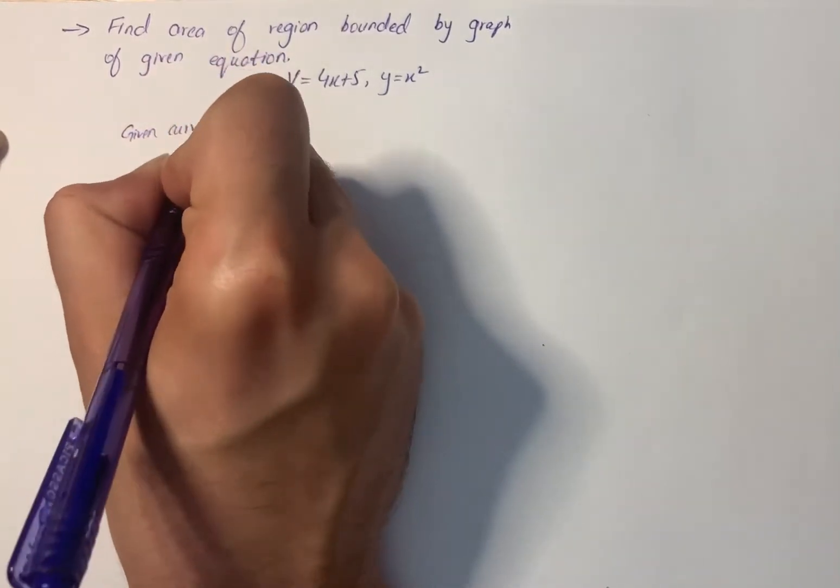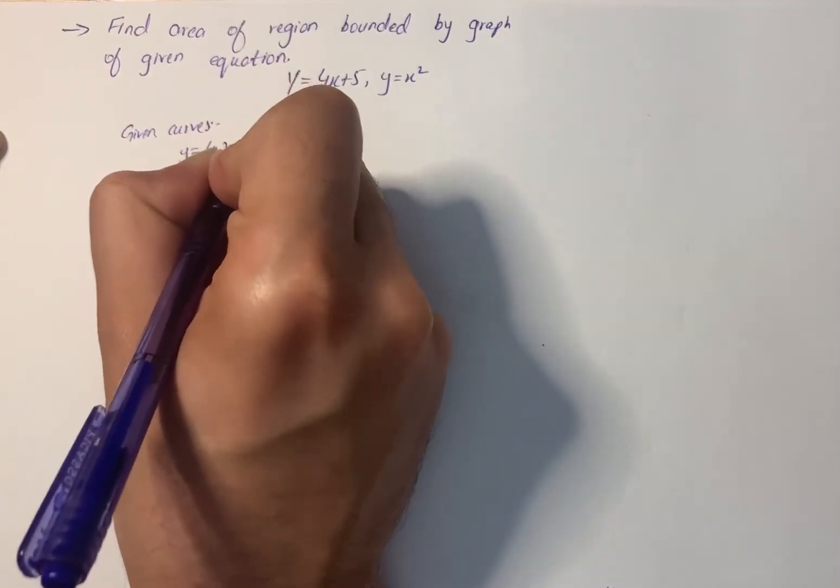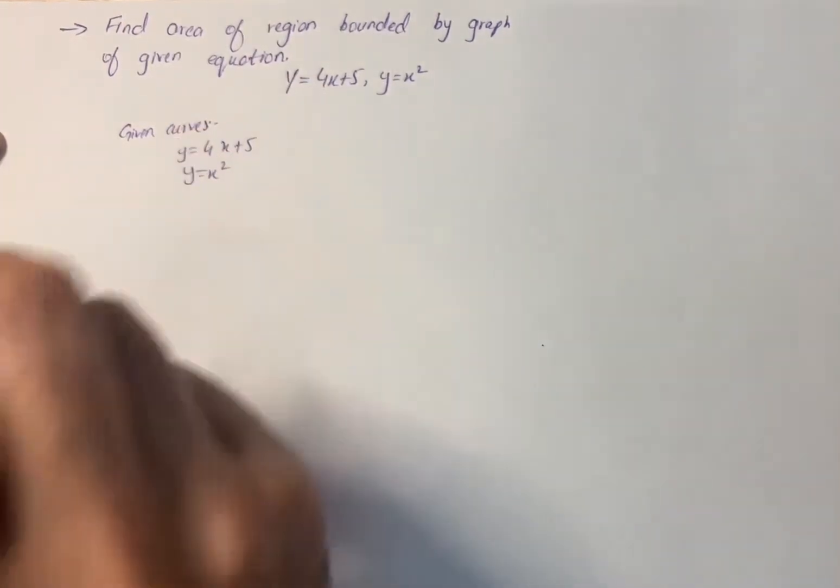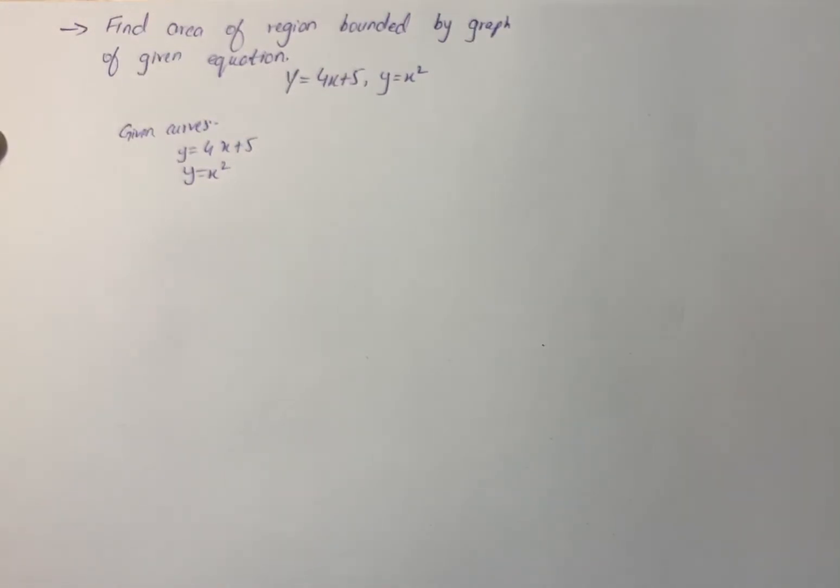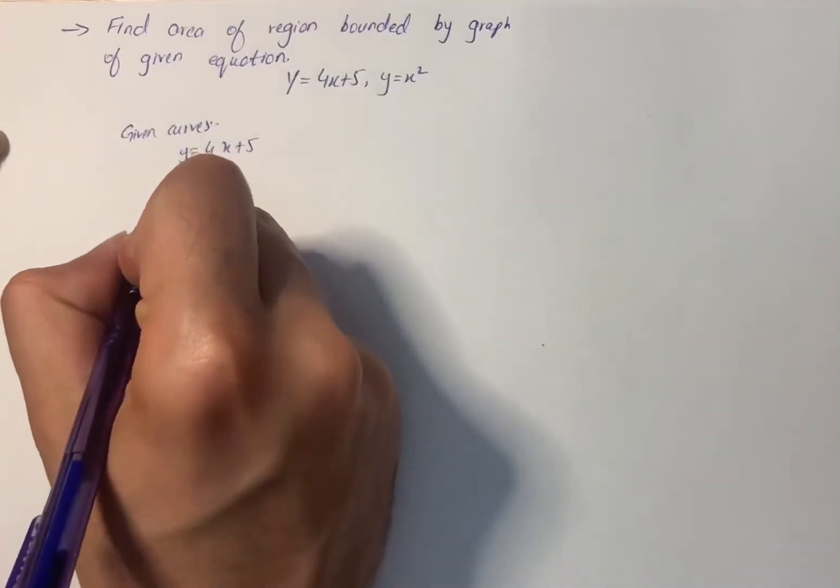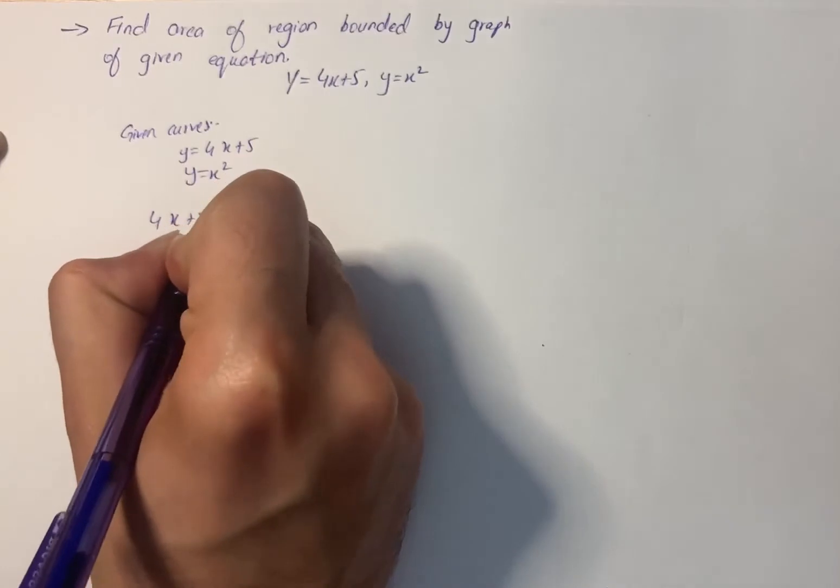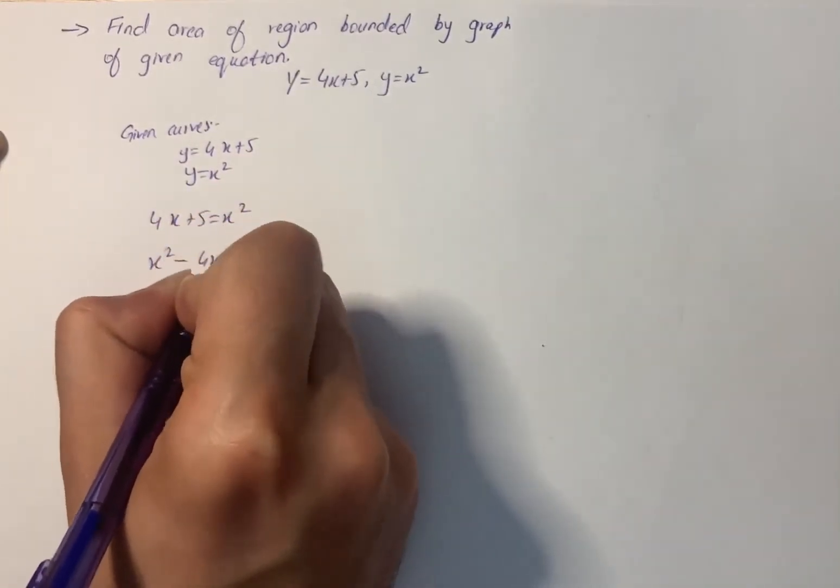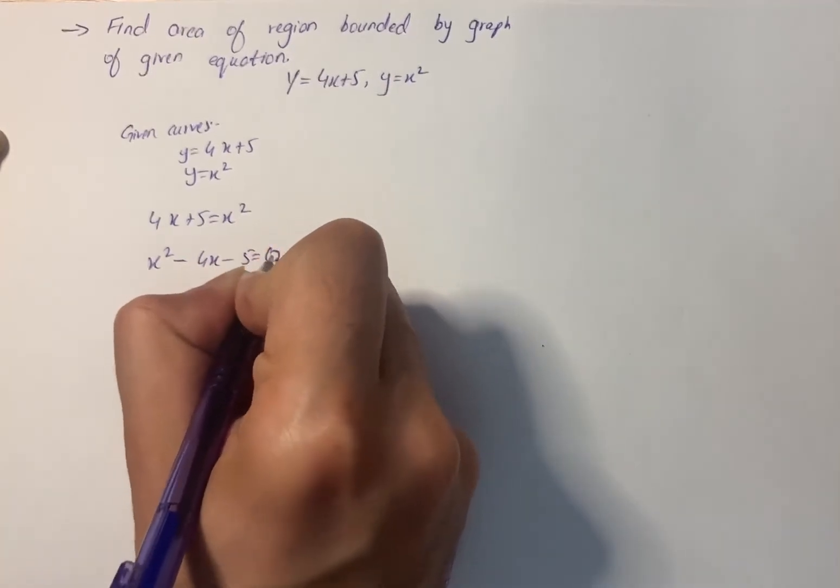Given curves are y equals 4x plus 5 and y equals x squared. Now calculate the intersection point by equating the curves, so we have 4x plus 5 equals x squared, and x squared minus 4x minus 5 equals 0.